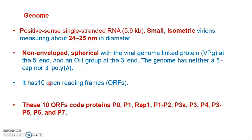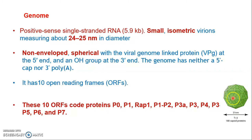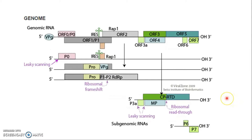The 10 ORFs produce 10 different proteins, each with a different function. Potato Leaf Roll Virus has a very beautiful icosahedral symmetry. Looking at the genome diagram: at the 5' end there is a small VPg protein linked, and at the 3' end there is a hydroxyl group. There is no cap and no tail. There are 10 ORFs, though older diagrams show seven (ORF0 through ORF7).